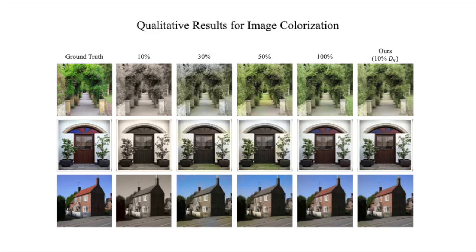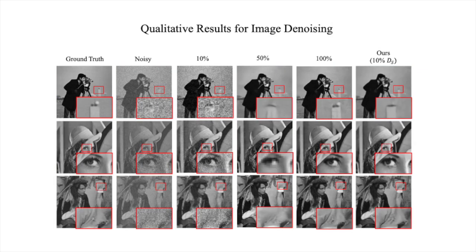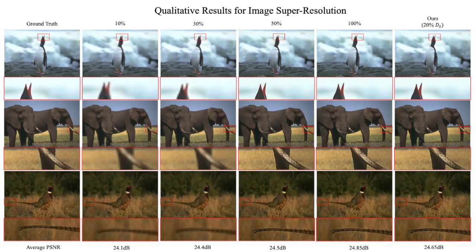We swiftly run over some of the qualitative results achieved by our method for the above three mentioned applications. We can observe that our method requires only about 10% of the data in paired form — that is supervised — to achieve similar reconstruction results as the fully supervised model. Similar observations can be made on the task of image denoising and image super-resolution.